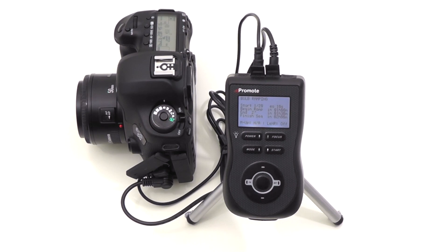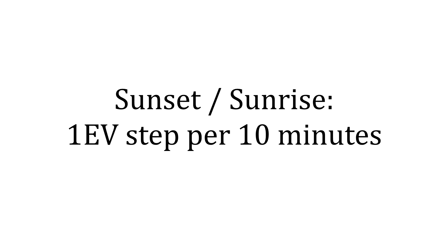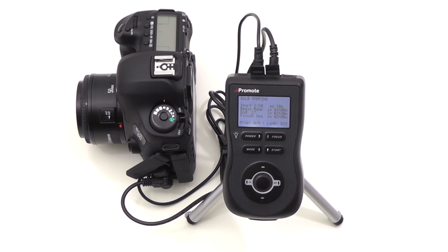Note that Live Modifications may not always be possible, such as when you are trying to modify an exposure sequence curve past the limits defined by the shortest obtainable exposure and your interval. The Promote Control will not let you enter a Live Mod that violates those constraints. We highly recommend trying the bulb ramping mode a few times prior to planning an actual field trip. The rule of thumb is approximately one EV step for every 10 minutes of sunset or sunrise, though it may greatly vary with geographical location, landscape profile, weather, and other external factors. Make yourself familiar with all the exciting possibilities of time-lapse photography in changing light, and check out our Advanced Bulb Ramping video to further extend your creative horizons with the Promote Control.